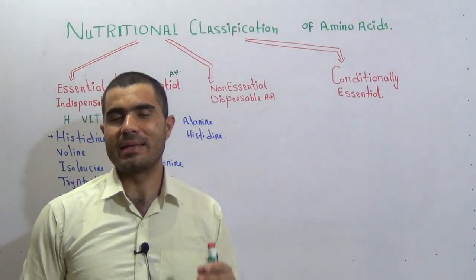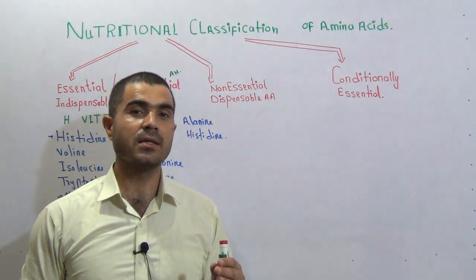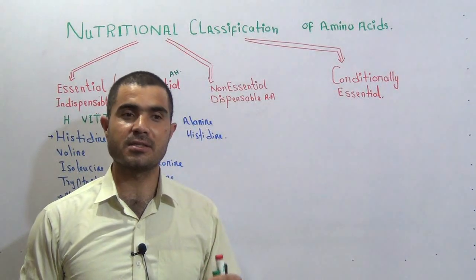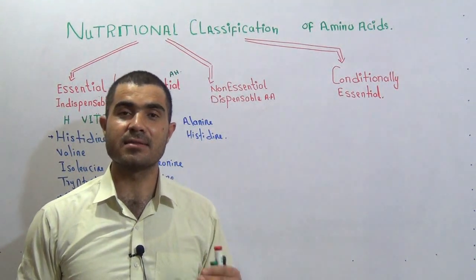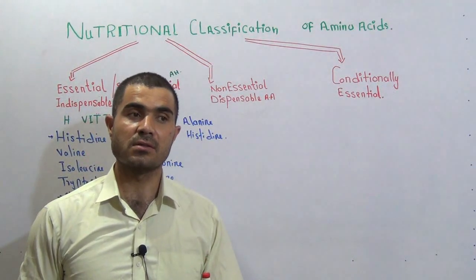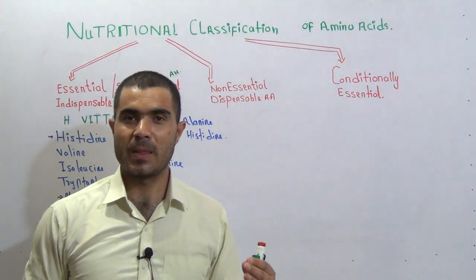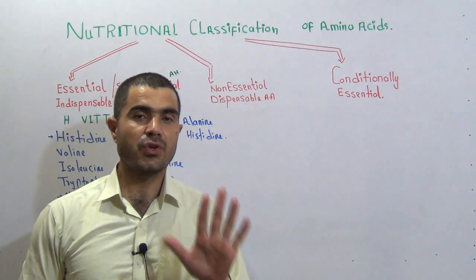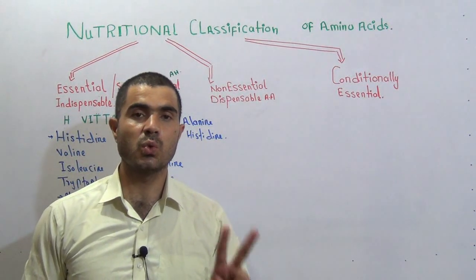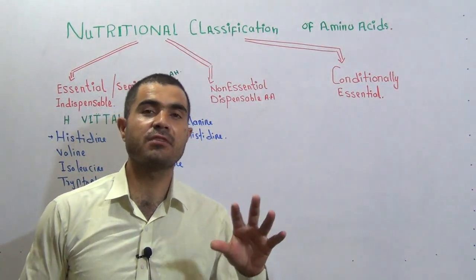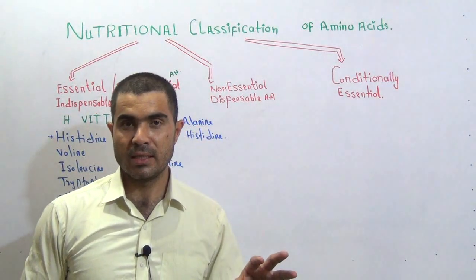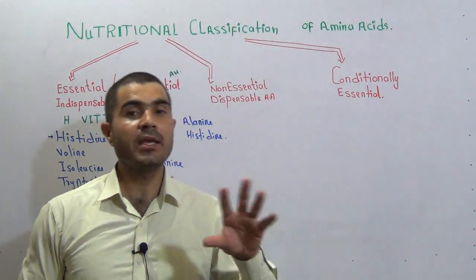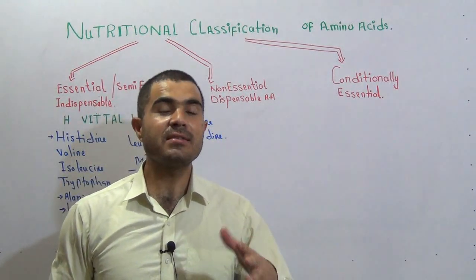Our body is highly organized and does its job very well, but it still has some limitations. Our body can synthesize lots of different compounds, but it cannot synthesize all compounds. For example, there are 300 amino acids, but only 20 amino acids are part of our structural proteins. These 20 are called standard amino acids, and among these 20, some amino acids can be synthesized by our body.